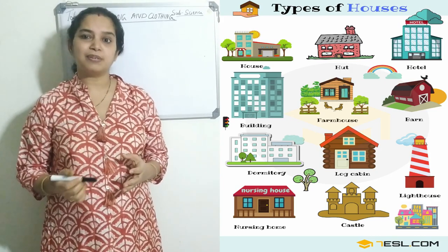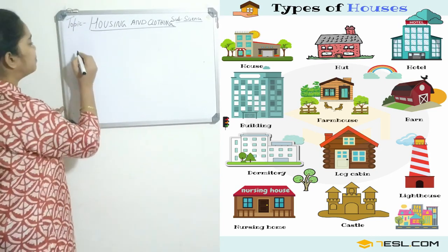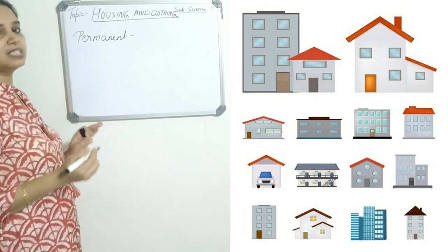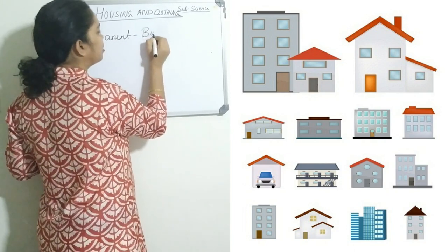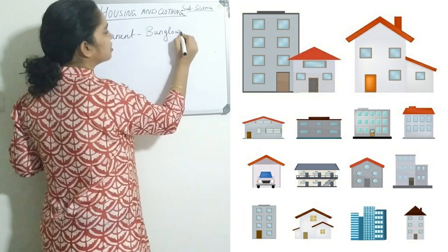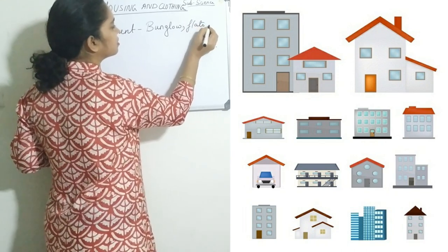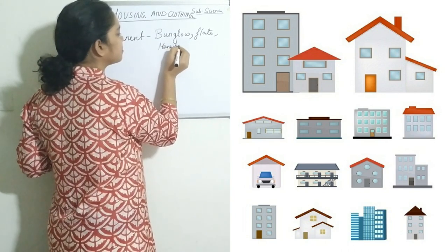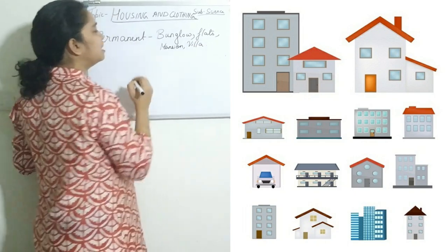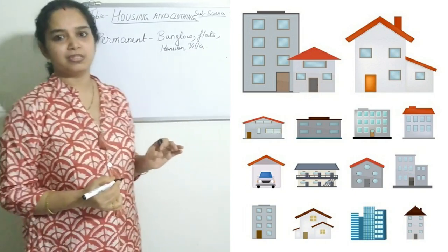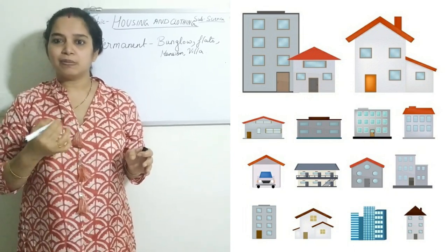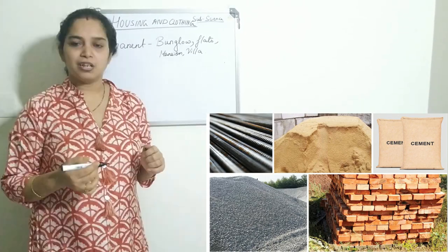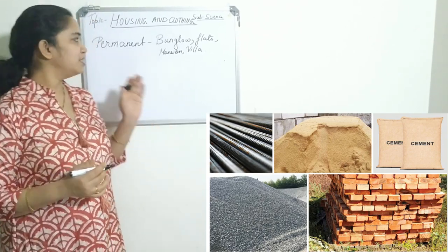Now there are different types of houses. Some are permanent houses — you might have seen houses in the cities. Examples include bungalow, flats, mansion, and villa. These are all permanent houses because they use bricks, stone, cement, wood, and steel for making them, so they are not breakable.